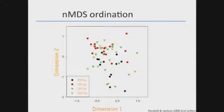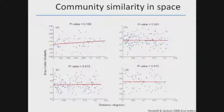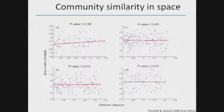You can also do the same thing through space, looking at distance decay curves — how similarity among communities declines with distance. The y-axis is Bray-Curtis similarity, with more similar assemblages at the top, more dissimilar at the bottom. The x-axis is distance — about 25 kilometers across. None of the regressions are significant; the curves are all flat. So these assemblages are not only similar through time, but within any one time period the assemblages are fairly similar in space as well — a much larger degree of order and predictability than we find in Connell's work on Heron Island.